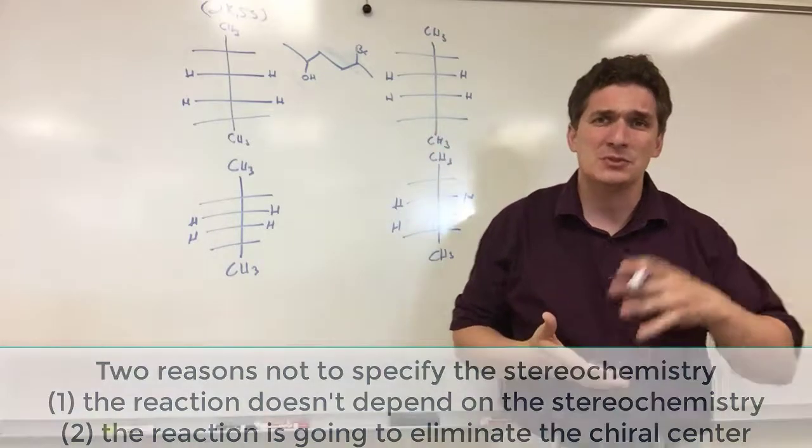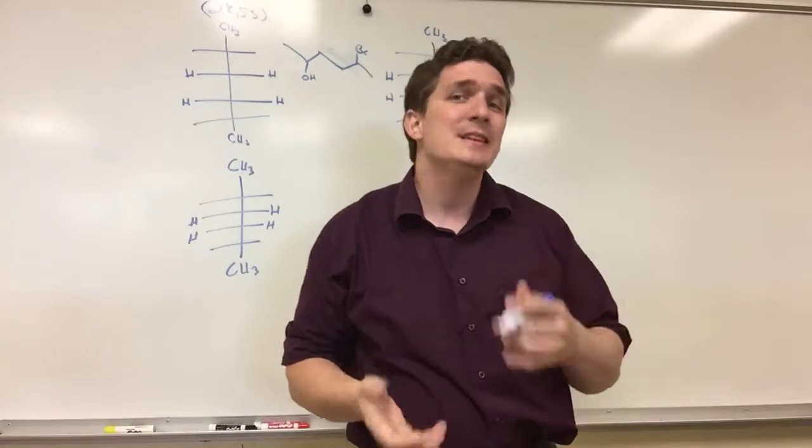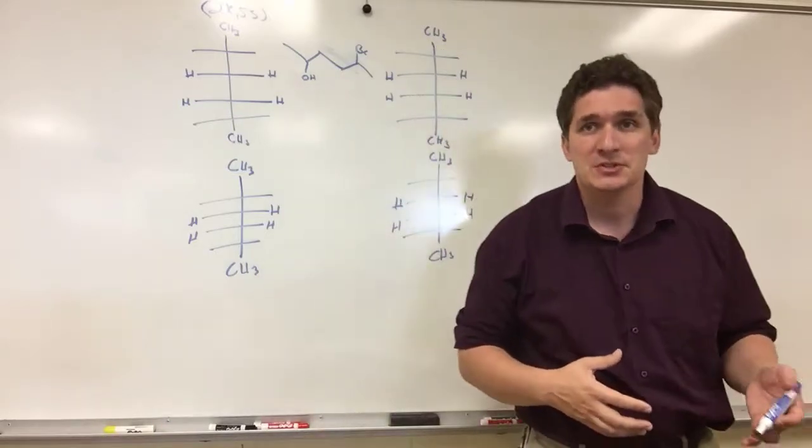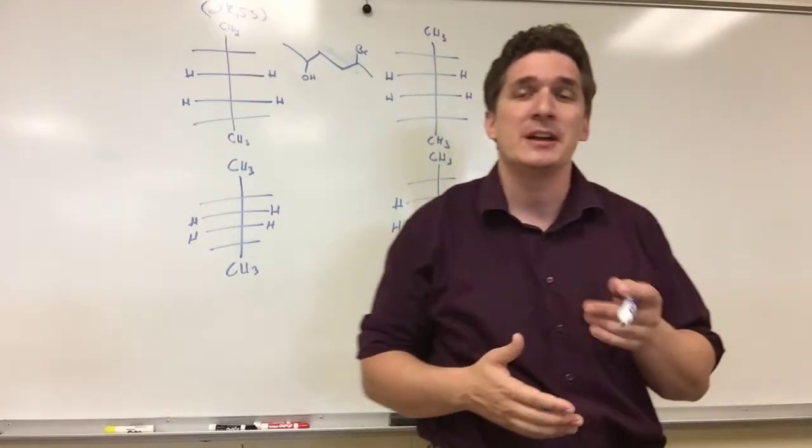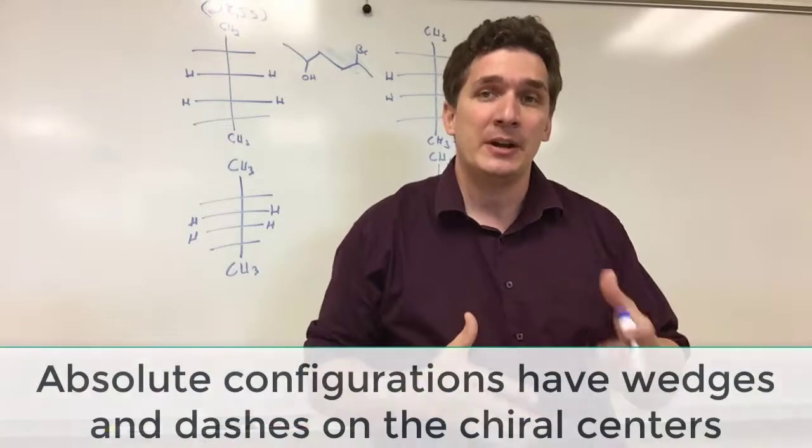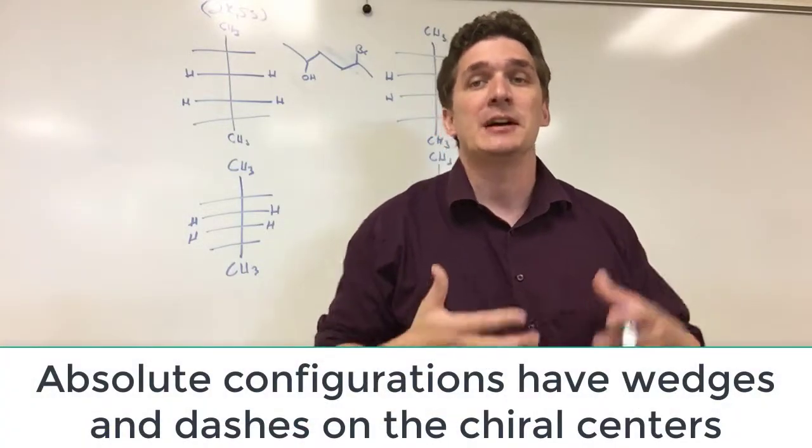Now if I were to draw the wedges and dashes in there, this would be the absolute configuration. So the absolute configuration is going to specify exactly which chirality, S and R, we're going to have at each chiral position.